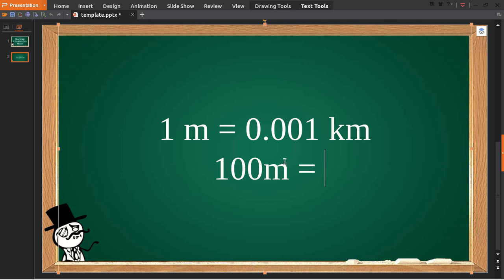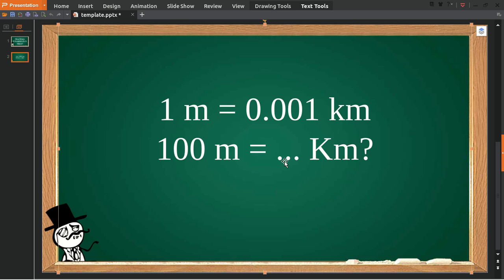Okay, to solve this problem, to convert meters to kilometers, the first thing you need to do is use 100 and multiply it with 1 meter, and then give it an equal sign.